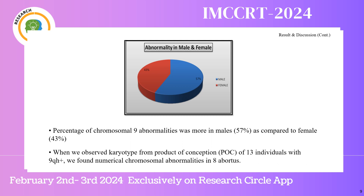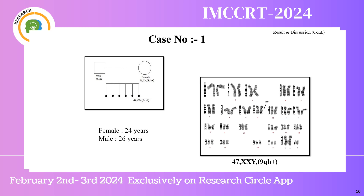When we observed karyotyping from products of conception (PoC) of 30 individuals with 9 QH plus, we found numerical abnormalities in 8 abortus materials. In Case 1, there was a couple who had 6 abortions. The chromosome finding of the PoC of the 6th abortion was 47 XXY with 9 QH plus.